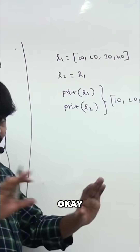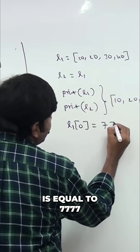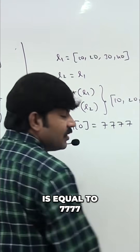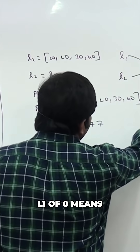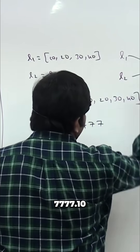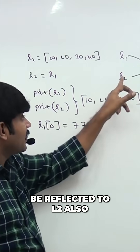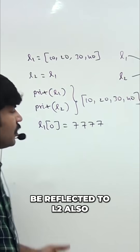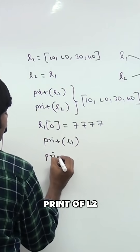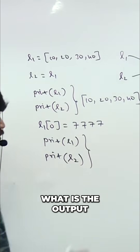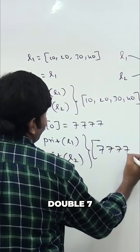Now l1 of 0 is equal to 77. That means the first element will be replaced in the same object. The change will be reflected to l2 also. Now let me print again — print l1 and print l2.